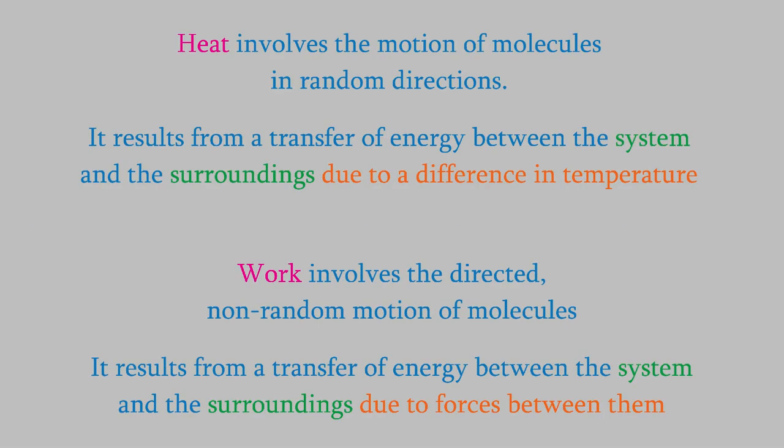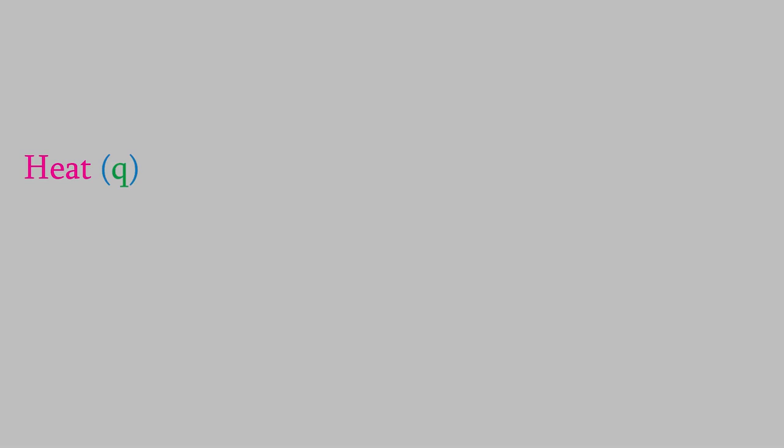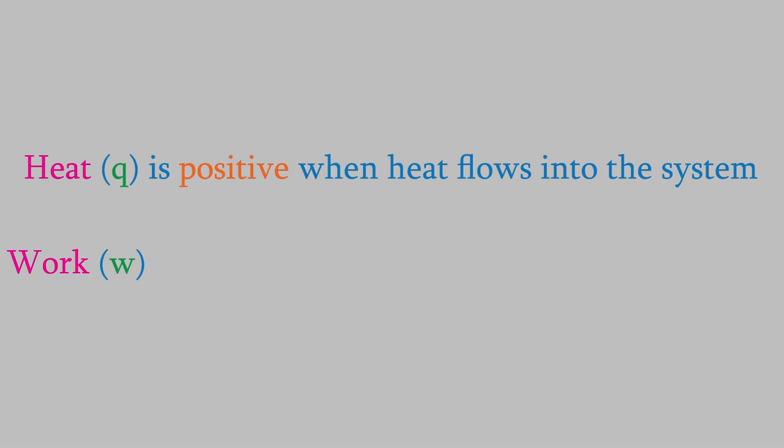So, heat and work both describe the transfer of energy between the system and the surroundings, but the reason for the energy transfer is different for heat and work. One other detail to remember is that heat is represented by the symbol Q, and by definition Q is positive when heat flows into the system from the surroundings. Meanwhile, work is given by the symbol W, and W is positive when work is done on the system by the surroundings.